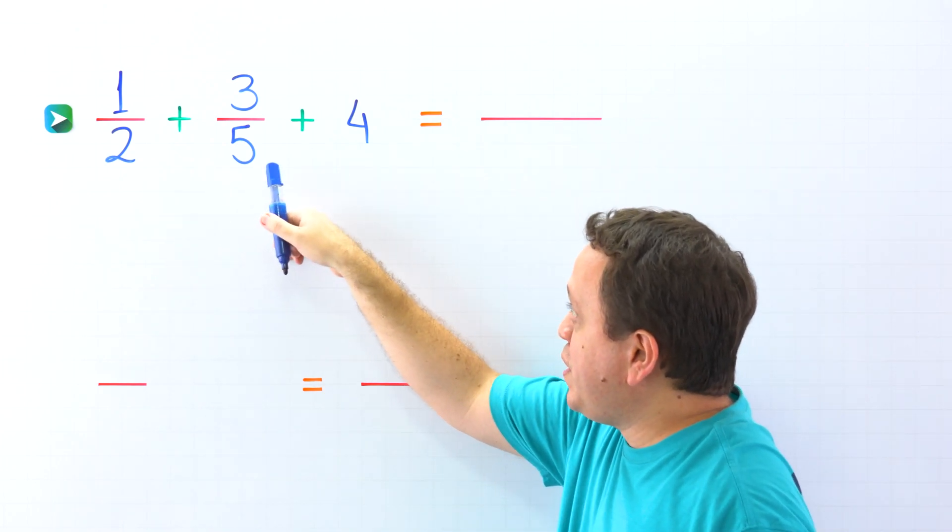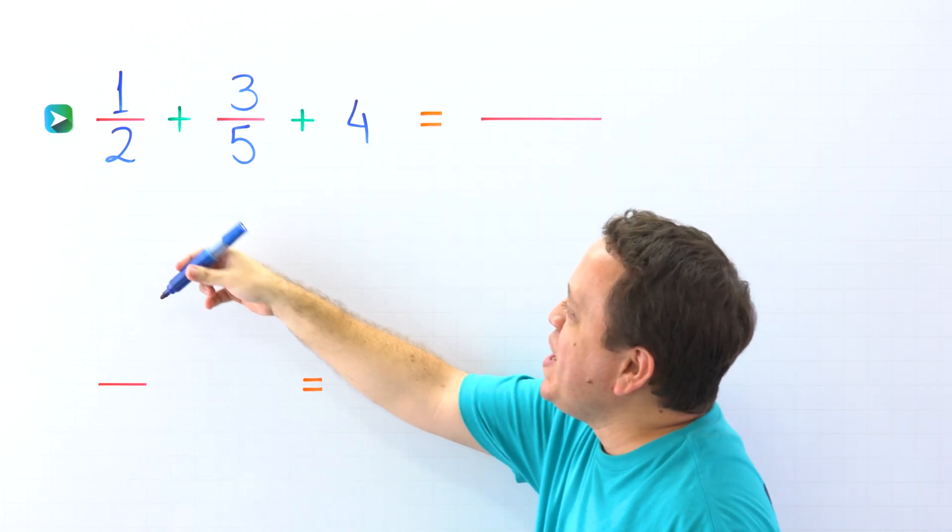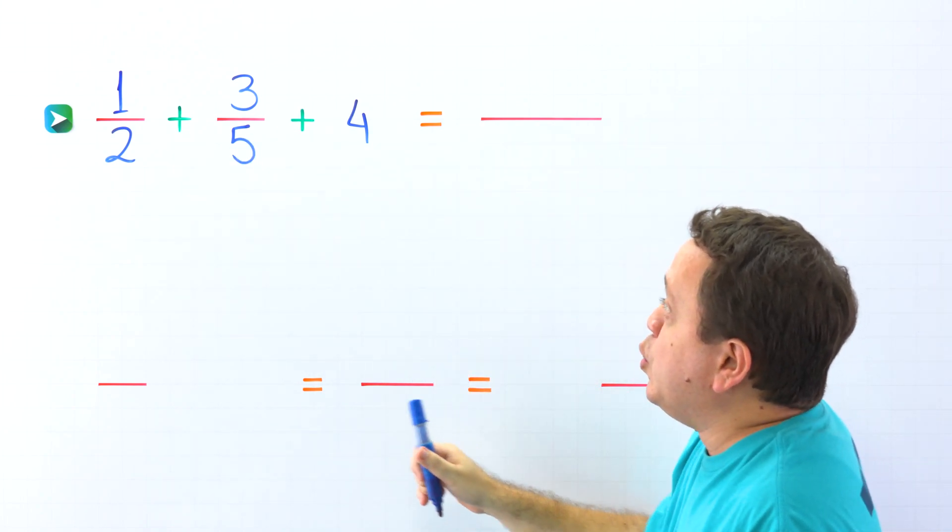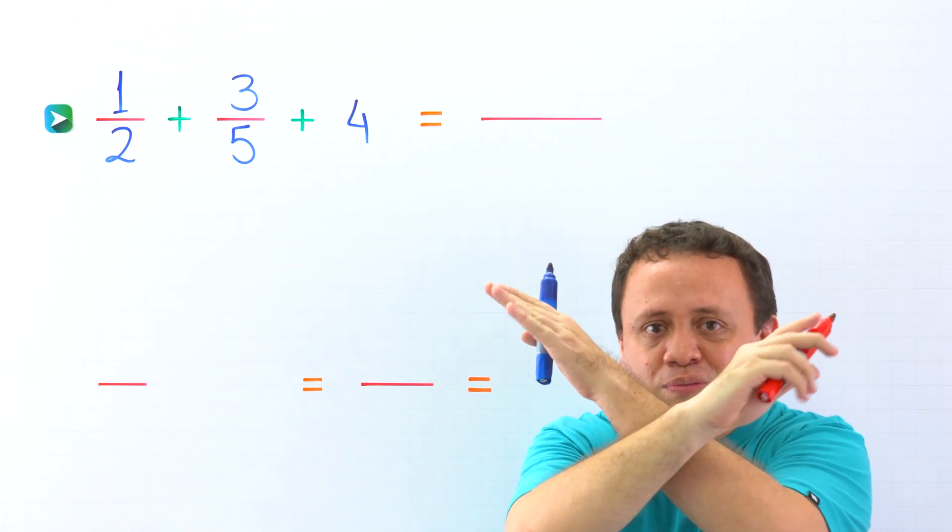First, we add the two fractions together, and then we add the resulting fraction to the whole number. So let's start by adding 1 half plus 3 fifths. To add these two fractions with unlike denominators, I would like to use the cross-products method.